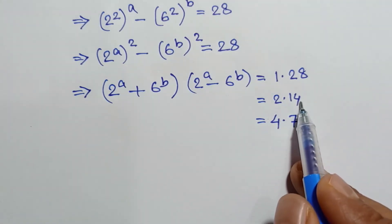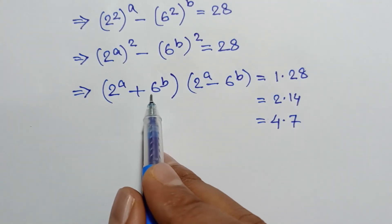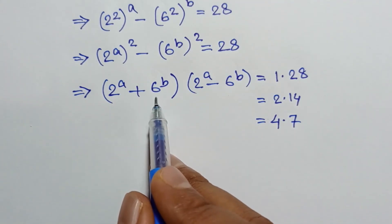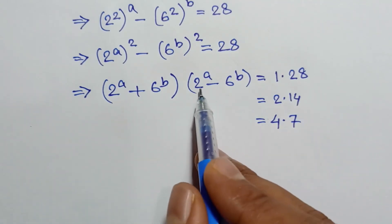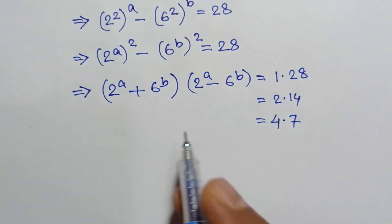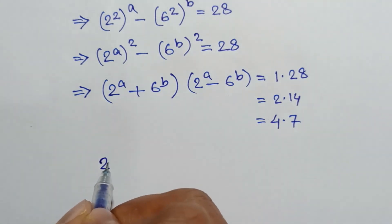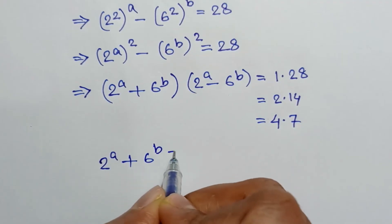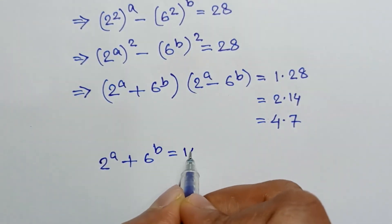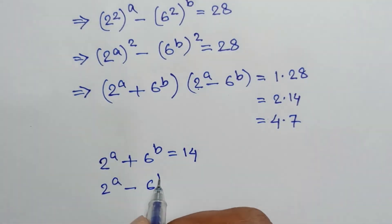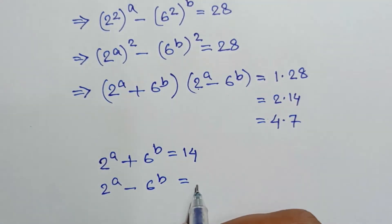So the only possible product is 2 times 14. Since 2^a plus 6^b is the larger factor, we set 2^a plus 6^b equals 14, and 2^a minus 6^b equals 2.